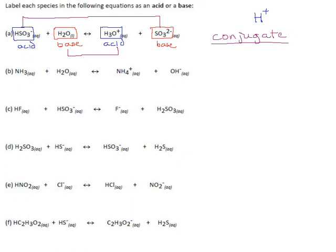Conjugates are things that are not the same but they go together. And in this case, HSO3 and SO3 are conjugates of each other. We say that this, you could say that this is an acid and that SO3 is its conjugate base or going the other way, you could say this is a base and this is its conjugate acid.